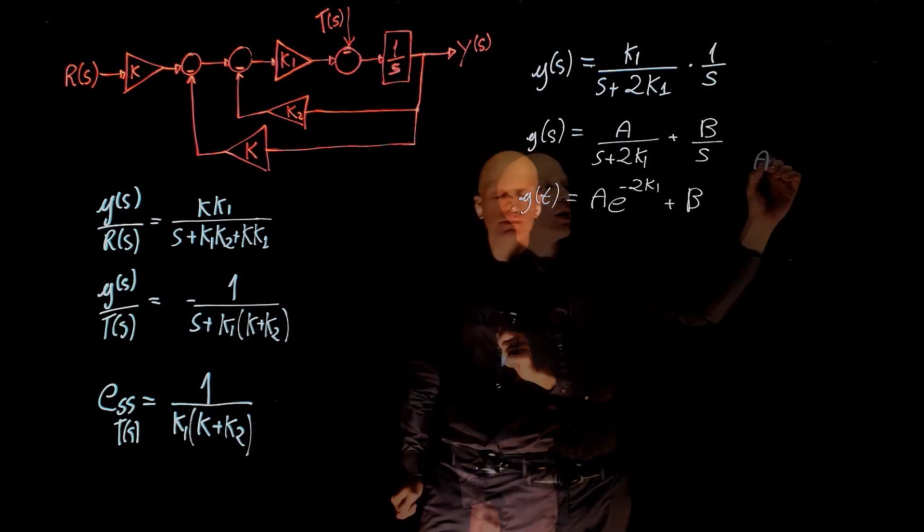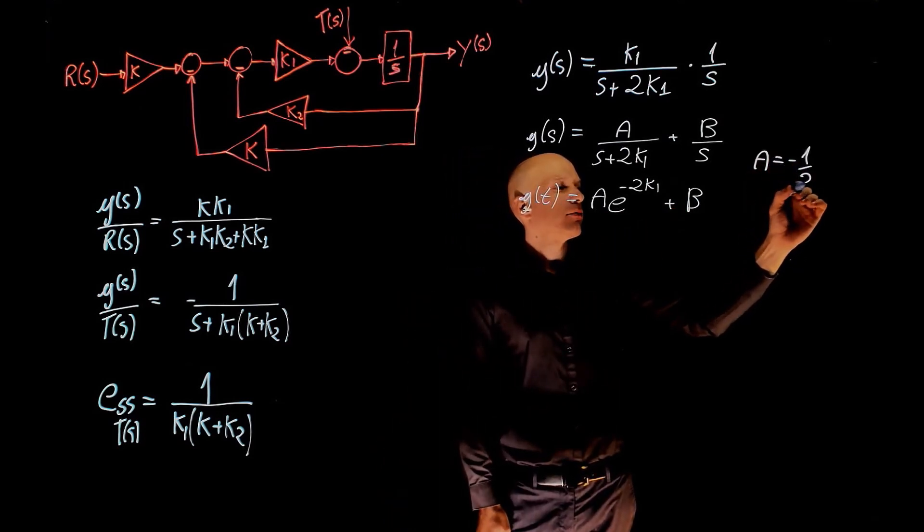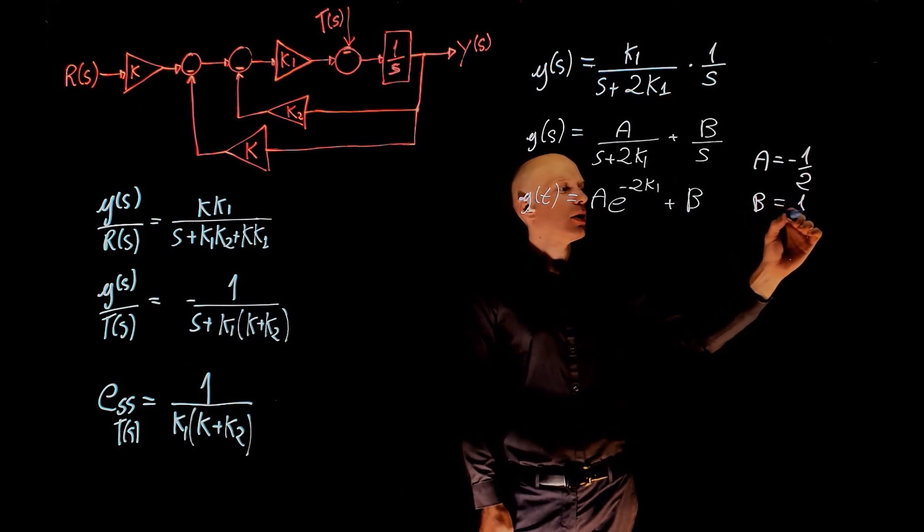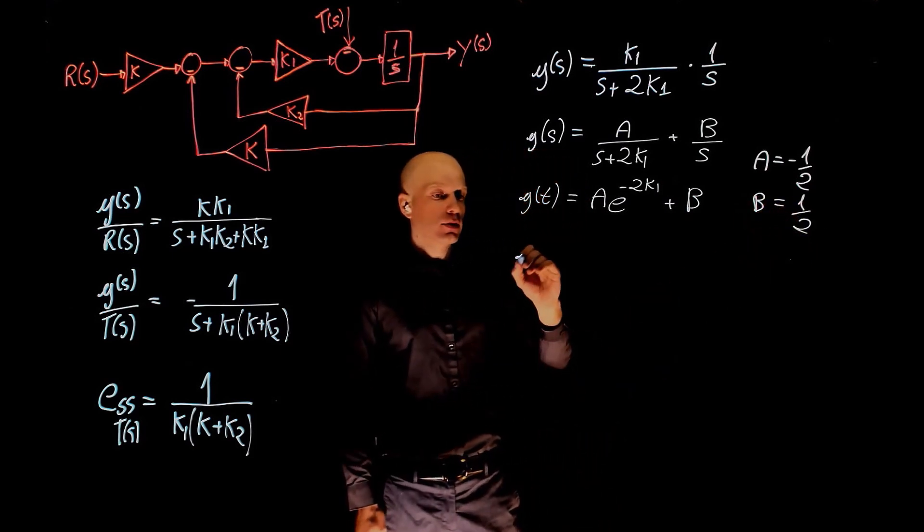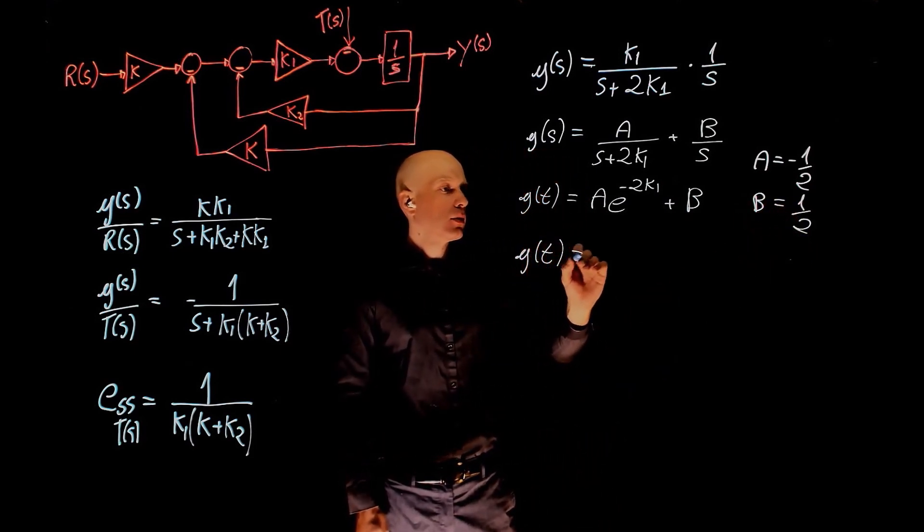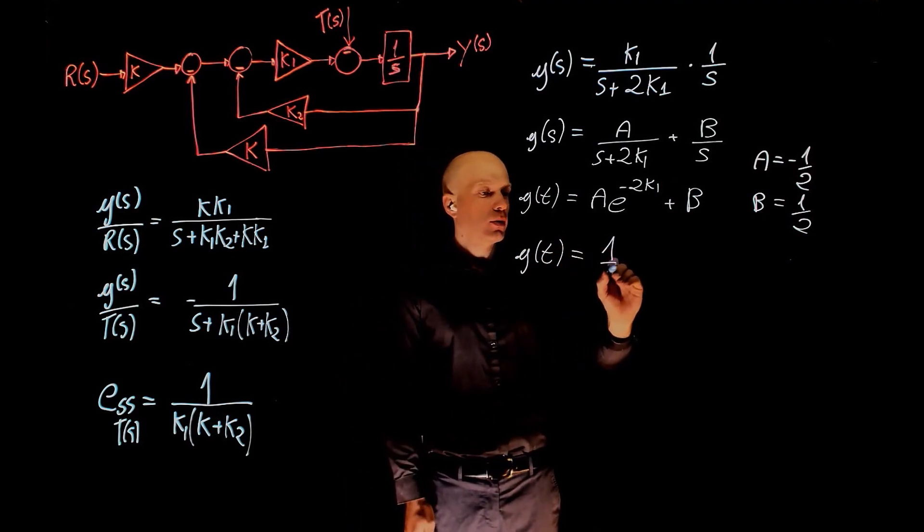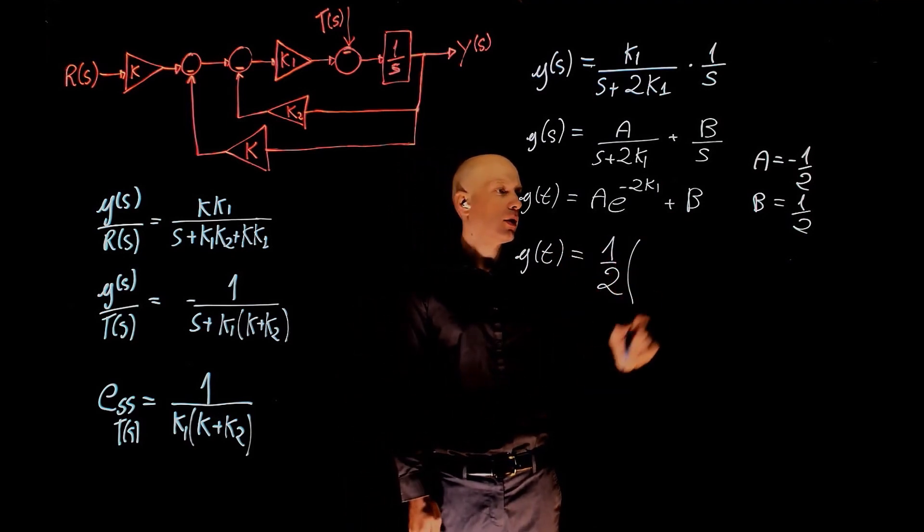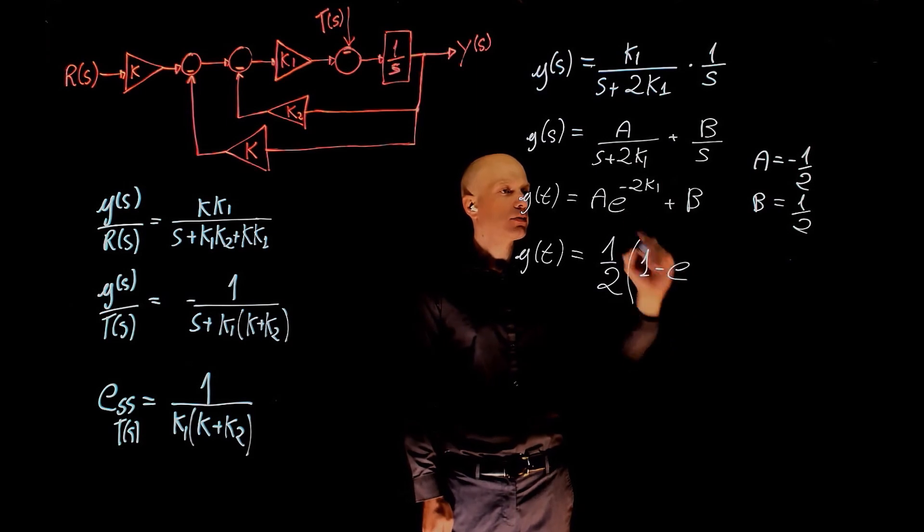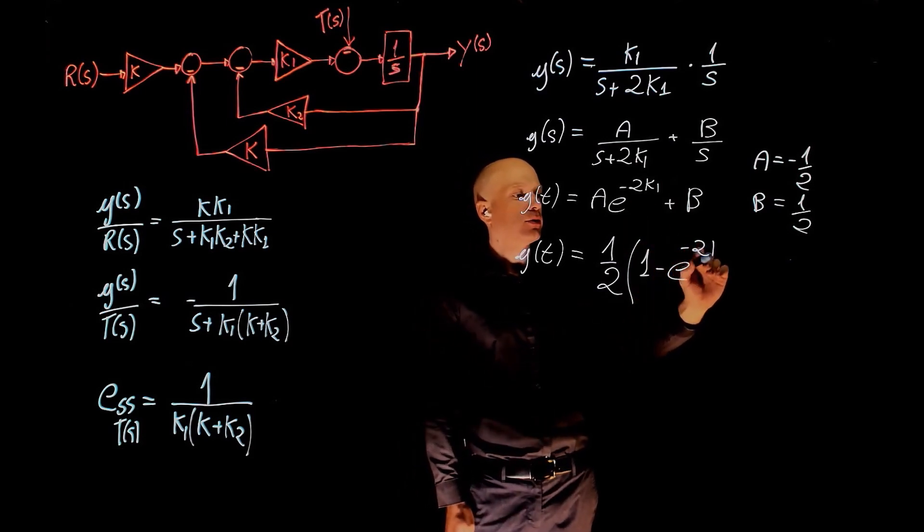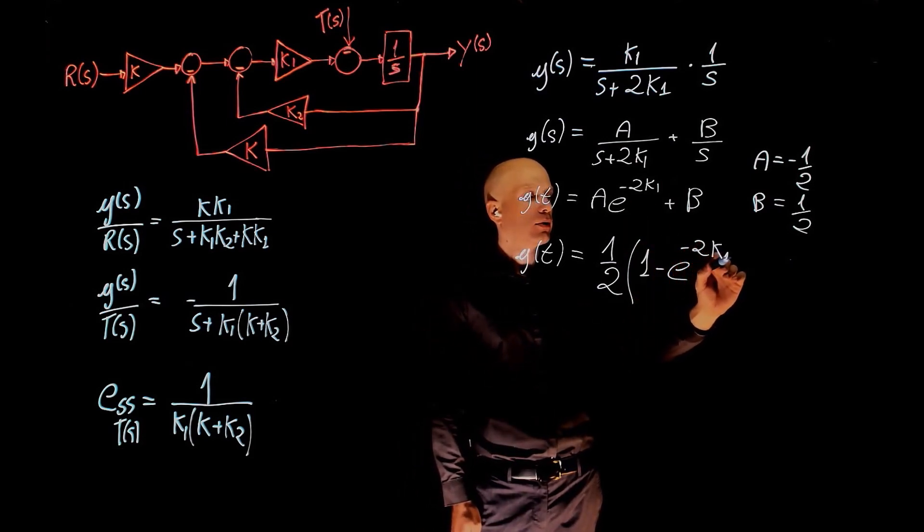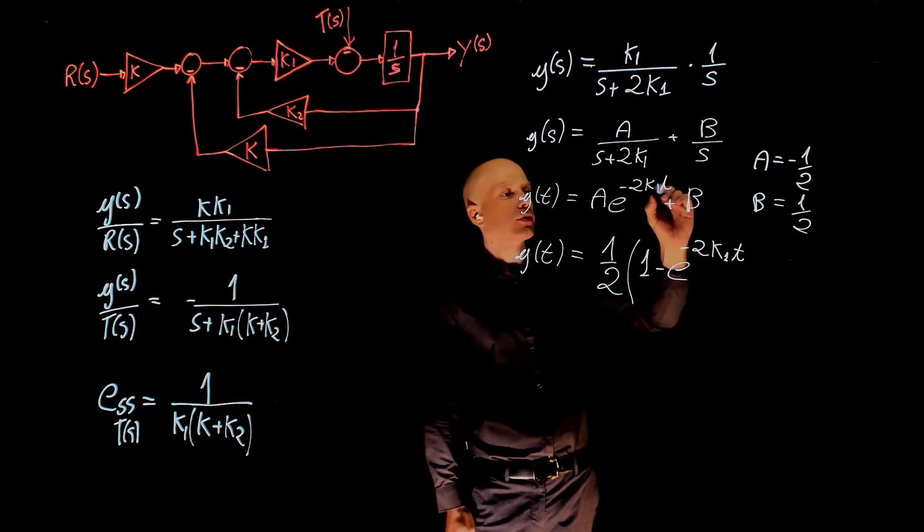If you solve for a and b, we'll get a is negative 1 half and b is positive 1 half. So y of t is 1 half of 1 minus the exponential of negative 2 k1 t.